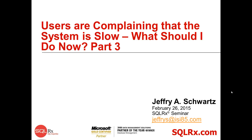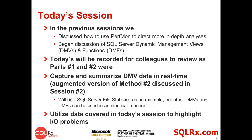In previous sessions we discussed how to use perfmon to do more in-depth analyses, and we began the discussion of the dynamic management views and functions. Today's session will be recorded, and it is going to talk about how to use the DMVs in real time to get information. The example we're going to discuss is specifically related to file statistics, but you can use other DMVs in exactly the same way.